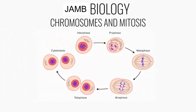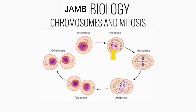Mitosis occurs in a number of steps, which you can summarize using this diagram. Chromosomes, spindle, and polar bodies start to appear. We can see from here that the chromatin starts to condense into chromosomes.